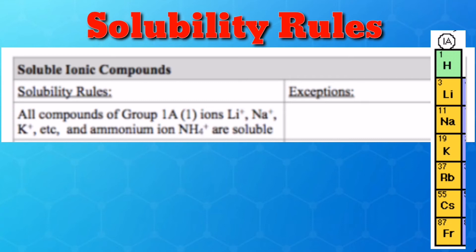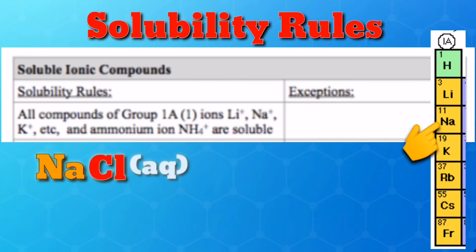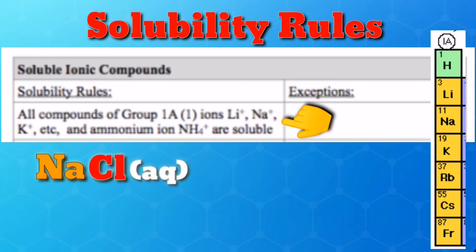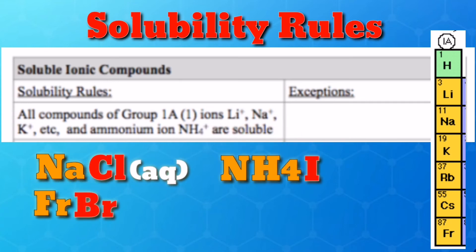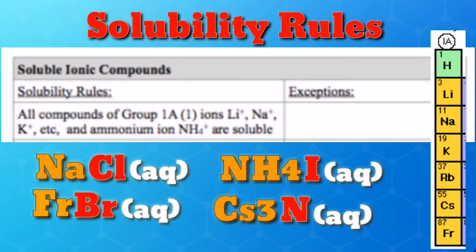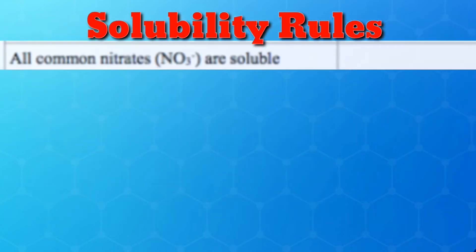Example: sodium chloride — since sodium is in Group 1A, sodium chloride is soluble because all compounds containing Group 1A elements are soluble, as per Rule 1. Further examples: francium bromide, ammonium iodide, and cesium nitride are all soluble because francium and cesium are Group 1A elements and ammonium is an additional exception.